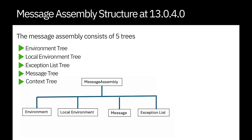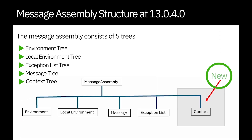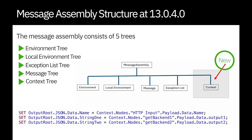Since ACE version 13.0.4, we have now added a fifth tree called the context tree, and have added further capability in version 13.0.5. The context tree is not captured by default — it is only made available when it is referenced in the message flow. It can be accessed using the ESQL compute node, the Java compute node, and using the trace node. In addition, the discovery connector nodes use the context tree when mapping inputs.